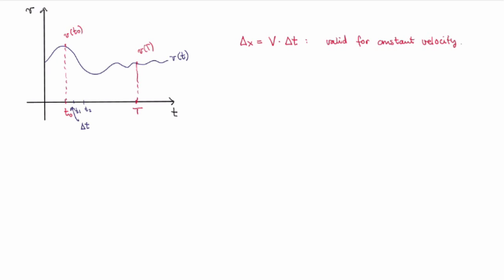Over these short intervals, while the velocity is still not constant, I can approximate it as being constant. Because the time interval is short, the result will be closer to the true distance traveled. So I'm splitting the distance traveled into short distances for each of these short intervals. To calculate those, I assume the velocity is constant over each short time interval. Over the first interval I calculate d₁, then d₂ for the second, d₃, and so on, all the way to dₙ.